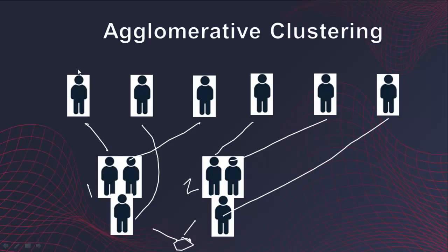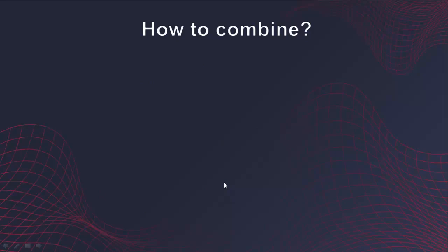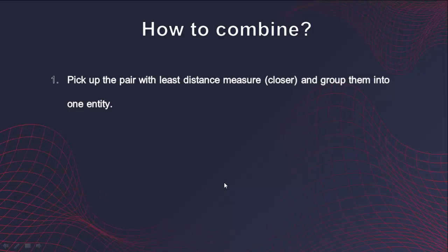This is the bottom-up approach: you start with single data points, such as student 1, student 2, student 3, and mix people into groups based on some characteristic depending on the domain of interest — for example, geographical location. To determine which two among six persons are closer, we use the distance measure: pick the pair with the least distance measure, assuming they are closer, and group them into one entity.